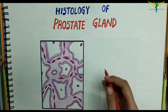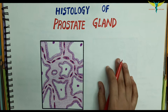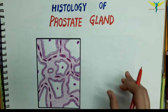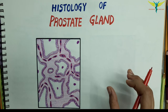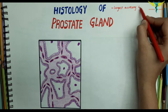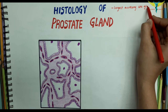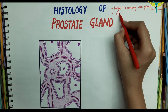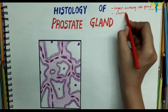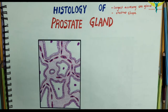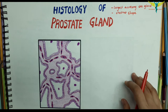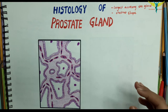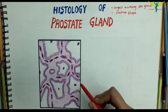The prostate is the largest accessory sex gland in males. It surrounds the beginning of the urethra and is shaped like a chestnut. It is made up of 30 to 50 compound tubular alveolar glands that are embedded in a framework of fibromuscular tissue.